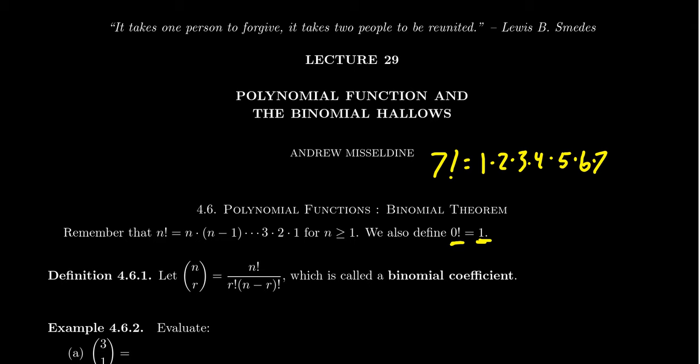People sometimes think that 0 factorial should be 0 because shouldn't you be multiplying by 0? But you can't multiply from 1 up to 0 because 0 is actually less than 1. So 0 factorial we define to be 1. The basic idea behind this — what is a factorial? You think of it as: how many ways can I line up children to go to the drinking fountain in kindergarten?